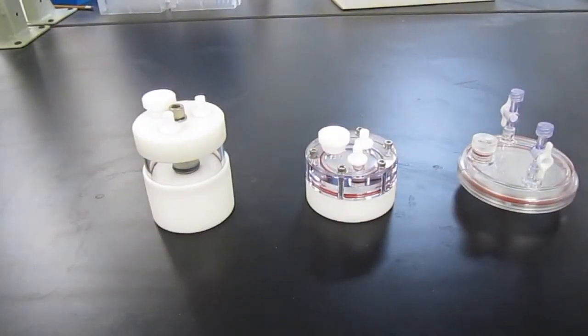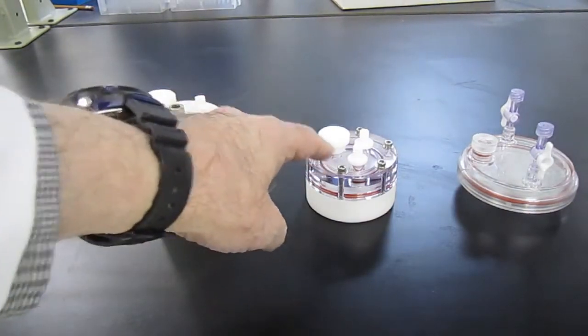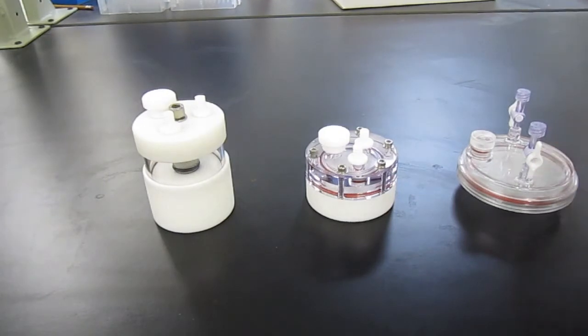These are the two types of bioreactor vessels available: the STLV, the HARV, and the disposable HARV.